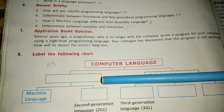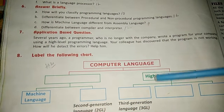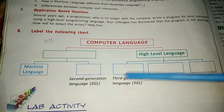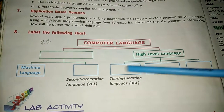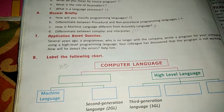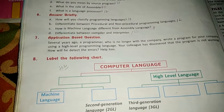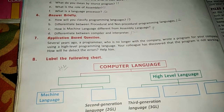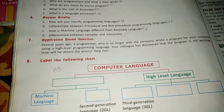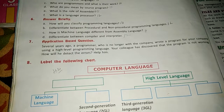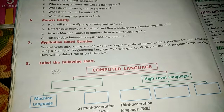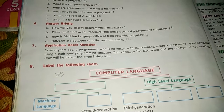Also draw and label the flowchart — you can refer to page number 10 for that. Additionally, read the chapter and start to learn the book exercises and question answers. Please make your notebooks neat and clean and draw a single line after each question.